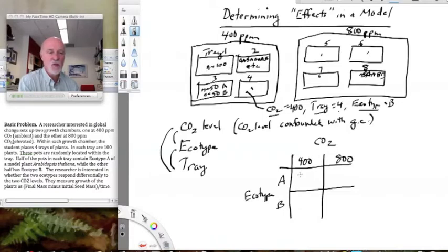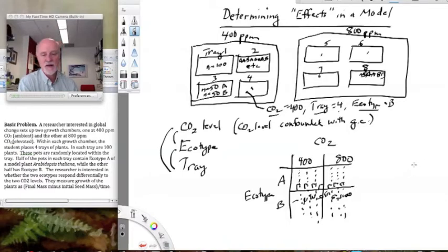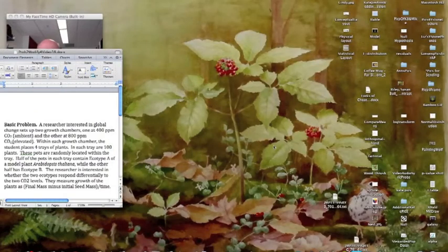So tray is going to be nested within CO2 level. So I can draw tray in as vertical dashed lines, dashed lines indicating that they are subdivisions within the CO2 level. So tray 1, 2, 3, 4, 5, 6, 7, and 8. So this entire thing is tricky. And, in fact, we can see now that not only is ecotype crossing CO2 perpendicular, but ecotype is crossing tray. I have each ecotype in each tray, so they cross at right angles.